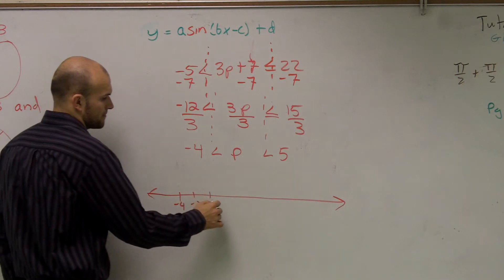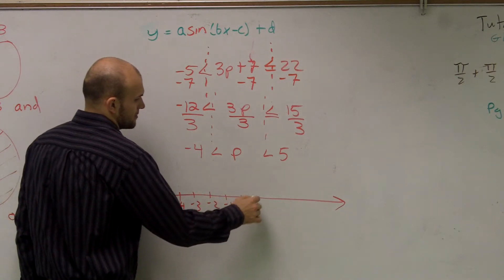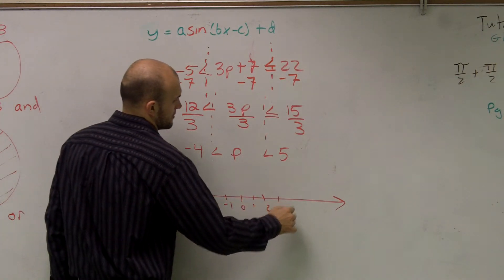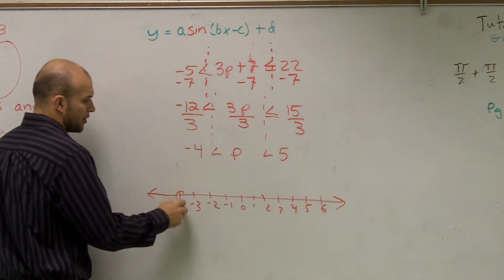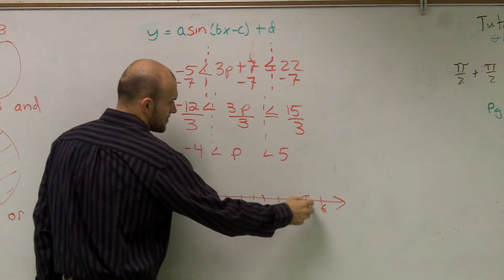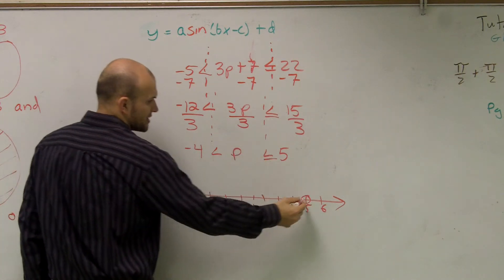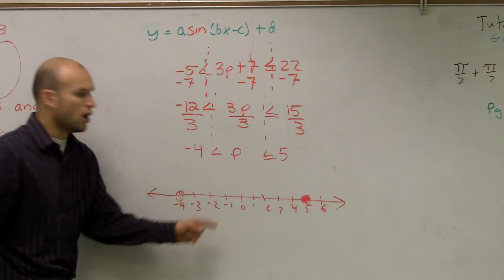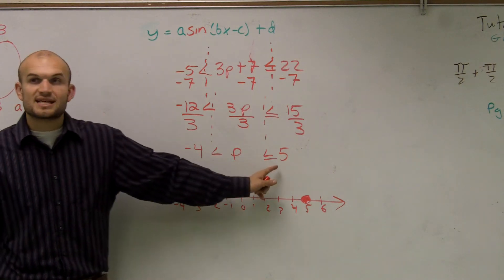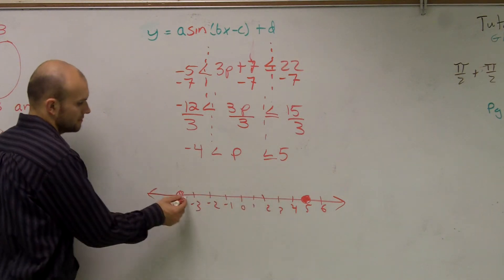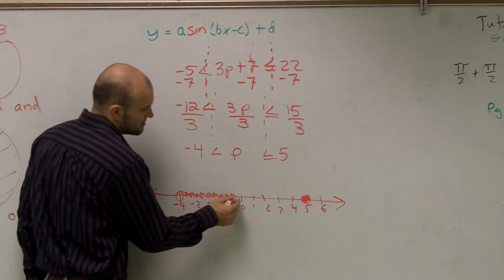Negative 4. So I go to negative 4 and I go to 5. Oh, that's less than or equal to, right? So that's filled in. So all the values that are greater than negative 4 but less than or equal to 5. Well, just give me all your points right there.